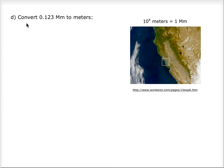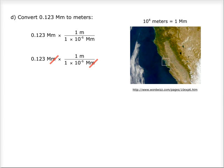Part d: convert 0.123 megameters to meters. You know that there are 1 times 10 to the negative 6 megameters in 1 meter, or 10 to the power of 6 meters in 1 megameter. So if you times 0.123 megameters by 1 meter and divide by 1 times 10 to the negative 6 megameters, the megameters cancel out and you are left with meters. There are 3 significant figures, so your answer is 1.23 times 10 to the 5th meters. Thank you.